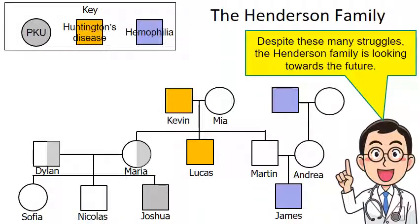This picture shows all the members of the Henderson family discussed over the course of the four topics we've learned: autosomal recessive, autosomal dominant, sex-linked, and today's topic of codominance. Despite the many struggles in the Henderson family, they are looking forward to their future. I hope you found these videos helpful — thank you for watching, I'll see you next time.